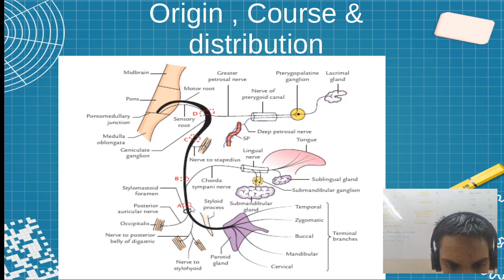This is the stylomastoid foramen. This is the occipital belly of occipitofrontalis. It supplies posterior belly of digastric. The anterior was supplied by... Please enter your answer in the comment section. The question is: anterior belly of digastric is supplied by? I have told this in one of my videos. Then stylohyoid muscle, it will supply.